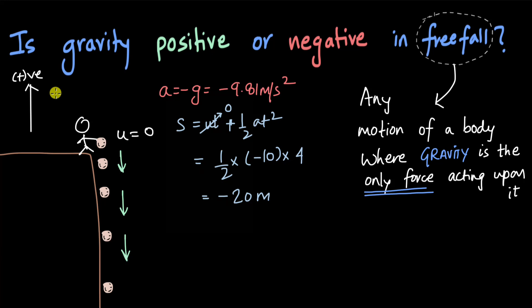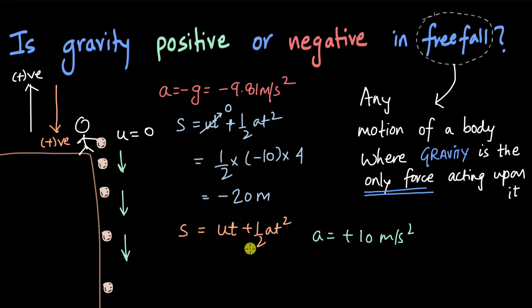If instead we take the downward direction as positive and do the same calculation, the displacement after two seconds is s equals ut plus half at squared. Now acceleration is plus 10 meters per second squared because it is in the positive direction. The ut term is zero, and half at squared gives half into 10 into 4, which equals 20 meters — positive 20 meters. The magnitude is the same but there is no negative sign, because the ball displaces in the positive downward direction.